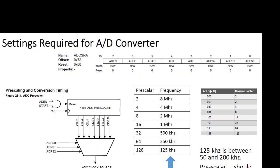In the previous examples using single conversion mode — not free running mode — every time we need an ADC conversion, we have to set the ADSC bit to 1. Then either we wait until that bit becomes 0 to identify the end of conversion, or we wait for the interrupt to trigger if the interrupt is enabled. When the interrupt triggers, we know the conversion is finished, and we go to the interrupt service routine to read the result.